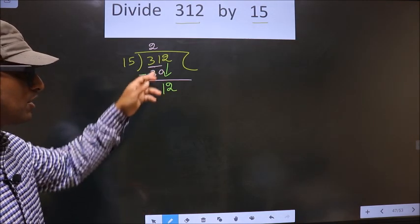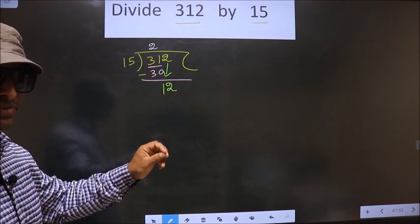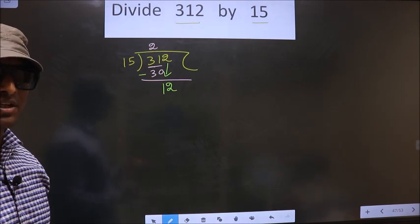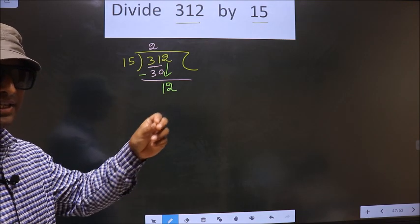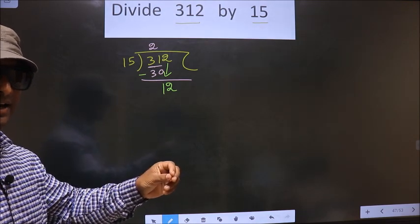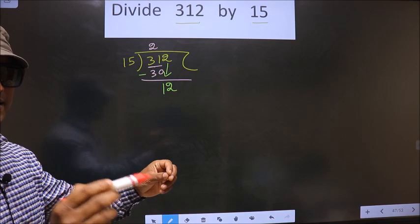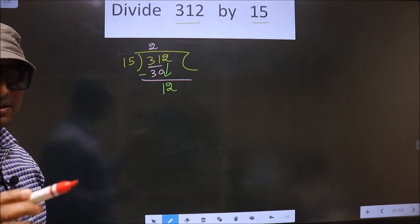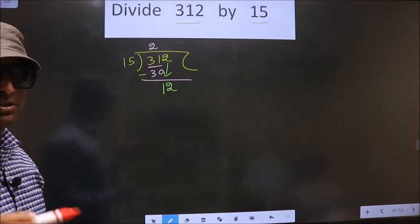Just now you brought a number down. In the same step, you cannot put a dot and take 0. I repeat. Bringing the number down and putting a dot and taking 0 both at a single step is wrong. You are not supposed to do that.